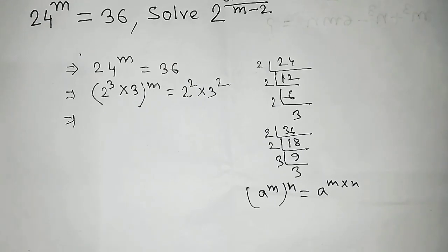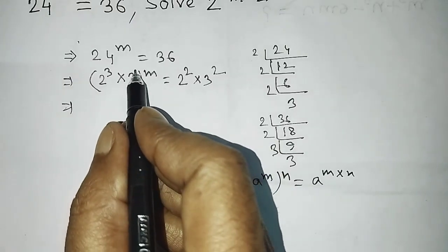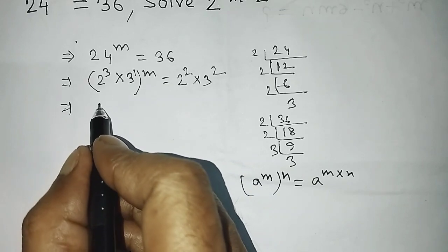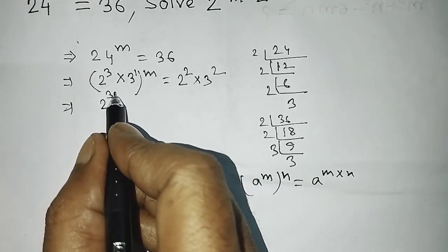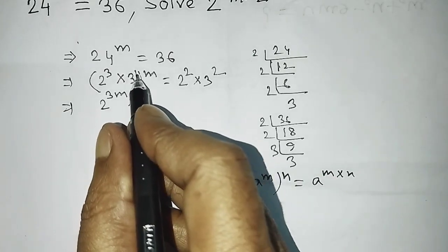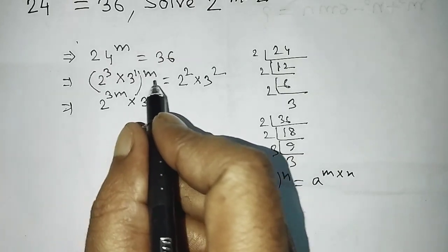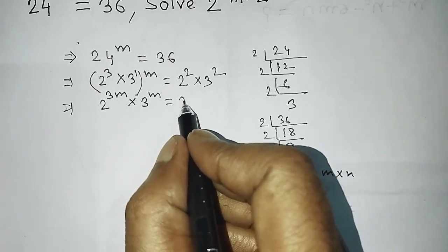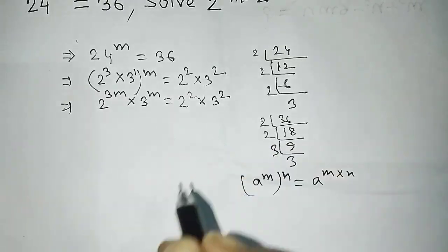Apply this formula here. The power of 3 here is 1, so multiply 3 with m to get 3m. And the power of 3 is 1, so 1 multiplied by m gives m. So the left side becomes 2 to the power 3m times 3 to the power m, equal to 2 squared times 3 squared on the right side.